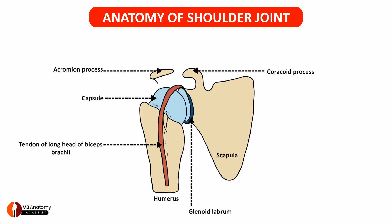Let's add the capsule of the shoulder joint in place. As you are aware, the capsule of the shoulder joint is attached medially and laterally. Medially on the scapula, it is attached in such a way that it goes slightly beyond the supraglenoid tubercle, so that it includes the tendon of the long head of biceps inside the shoulder joint. Inferiorly, it is slightly loose, and laterally it gets attached to the humerus at the anatomical neck.